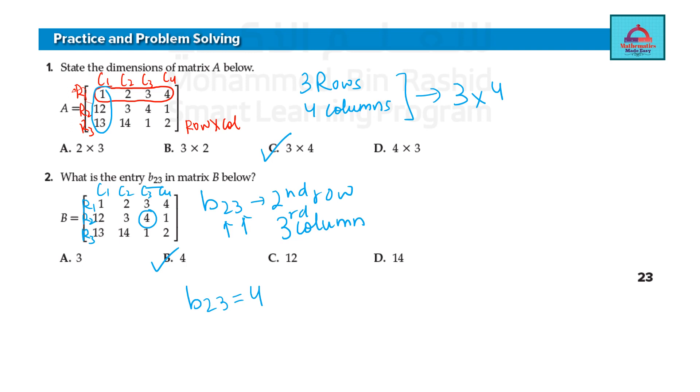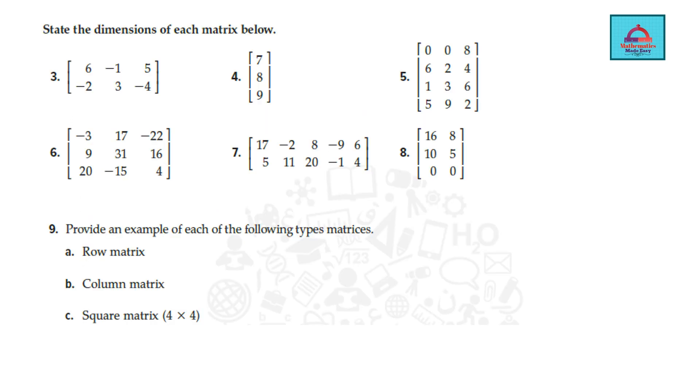Next question, you need to state the dimension. So you need to say row multiplied by column. So 2 rows, 3 columns. This is 2 cross 3. 3 rows, 1 column. So this is 3 cross 1.